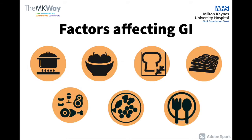Factors affecting glycemic index: cooking and processing methods, which start the breakdown of the carbohydrate structure in foods; the ripeness of fruit and certain vegetables — the more ripe, the higher the GI the fruit becomes; and whole grains and high-fibre foods, which act as a physical barrier to slow the absorption of carbohydrate.